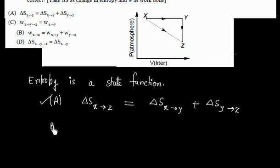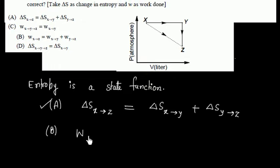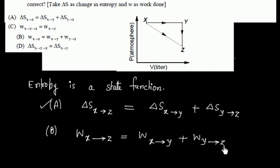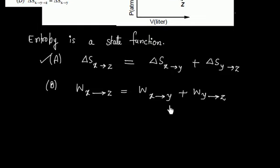Now let us consider option B. Option B states that the work done from X to Z is the same as work done X to Y plus Y to Z. This is not true because work is not a state function — it depends upon the path. So work done along one path and work done along another path is not the same. Work depends upon path, so this option is wrong.